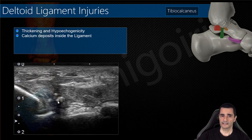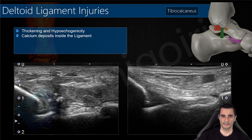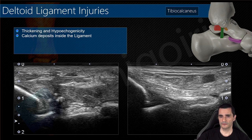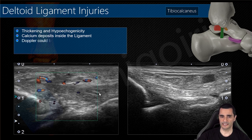Calcium deposits can be found inside the ligament as a metaplasia of the injured ligament. This is another example of hypoechoic thickening of the ligament and the normal side, in this case with calcium deposits inside the ligament and vascularization on Doppler.